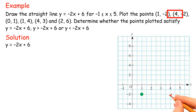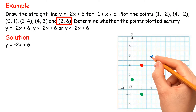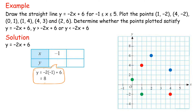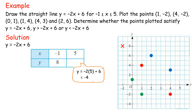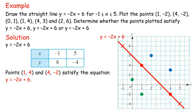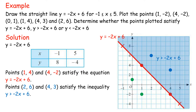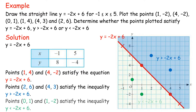Solution: y equals negative 2x plus 6. When x equals negative 1, y equals 8. When x equals 5, y equals negative 4. Points (1, 4) and (4, negative 2) satisfy the equation y equals negative 2x plus 6. Points (2, 6) and (4, 3) satisfy the inequality y greater than negative 2x plus 6. Points (0, 1) and (1, negative 2) satisfy the inequality y less than negative 2x plus 6.